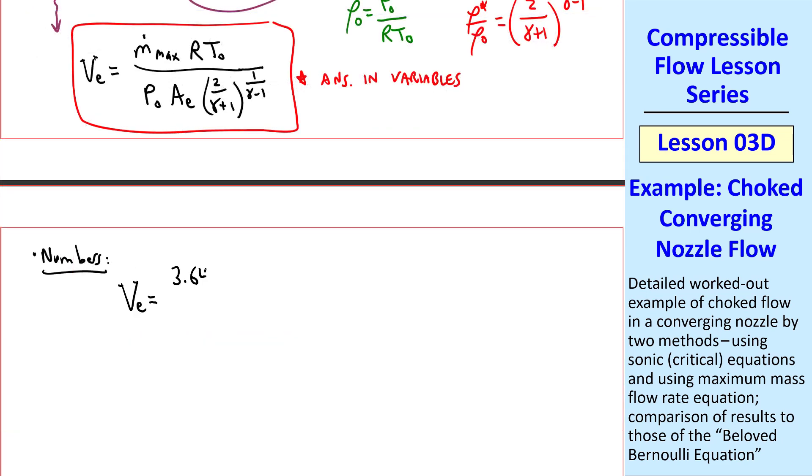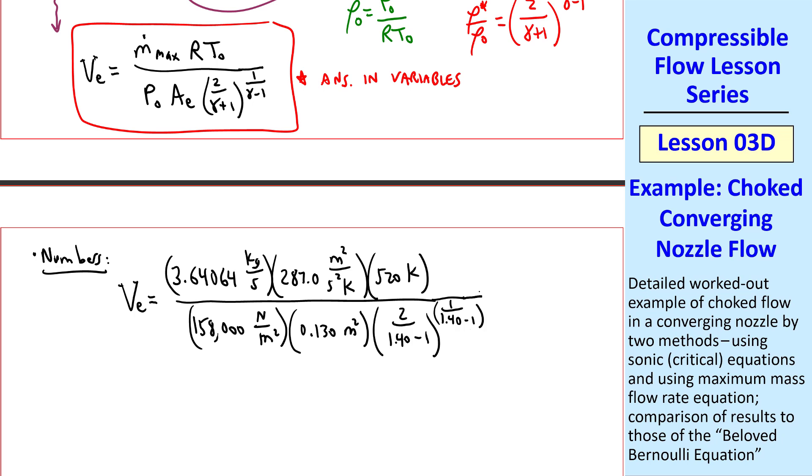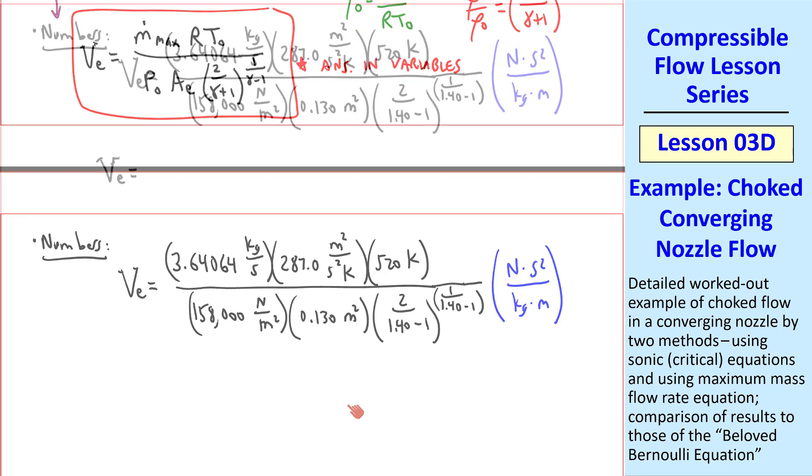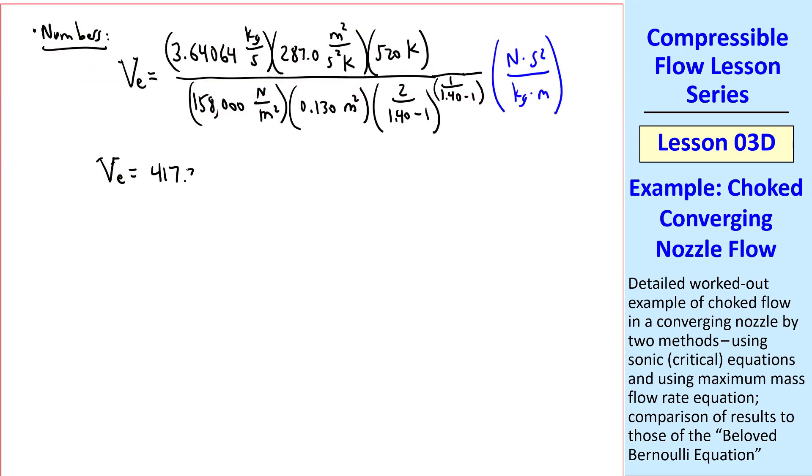Plugging in the numbers, we have m dot max from part A, and I'm using lots of digits to avoid round off error, R for air, T0, and I'm going to write P0 as 158,000 newtons per meter squared, Ae, and plugging in 1.40 for gamma for air. We'll need one unity conversion factor, namely a newton second squared is a kilogram meter. And you can verify for yourself that all the units cancel except meters per second. And we get VE equal 417.27 meters per second, or 417 meters per second to three digits, which agrees with method A. And that always makes me happy.